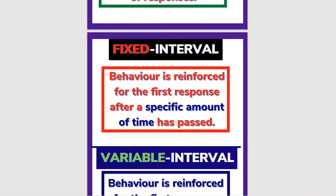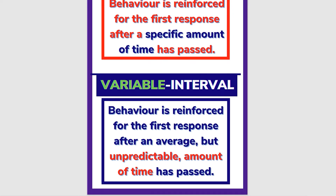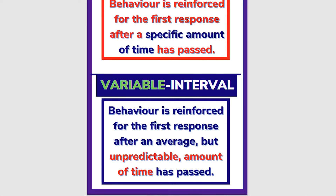In a fixed interval schedule, for example, if we reward the dog every 10 minutes — after 10 minutes have passed, we give the reward. This is the fixed interval schedule because the time interval is fixed. In contrast, the variable interval schedule means the time interval is not fixed.